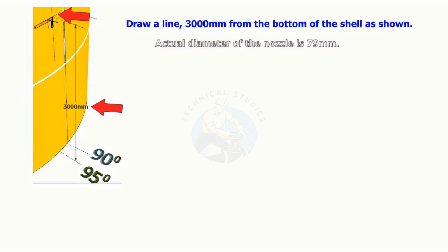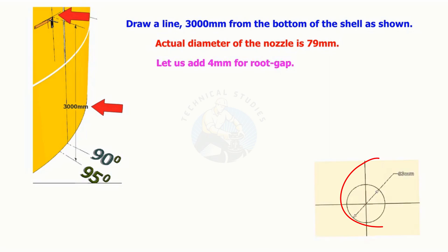The diameter of the nozzle is 79 millimeters. Add 4 millimeters extra to this for root gap.